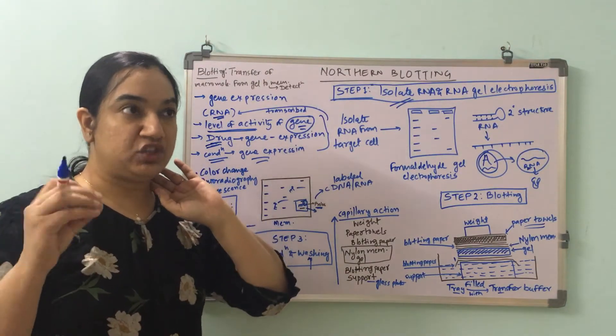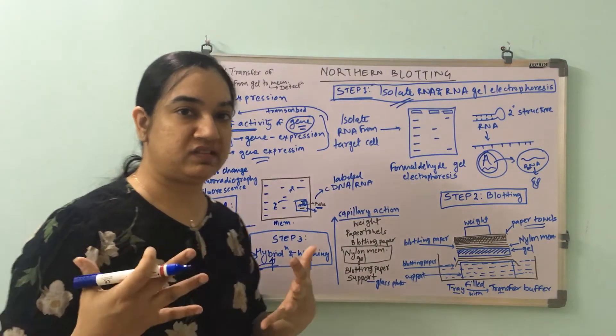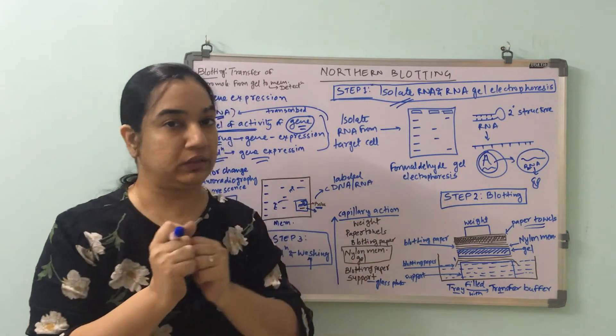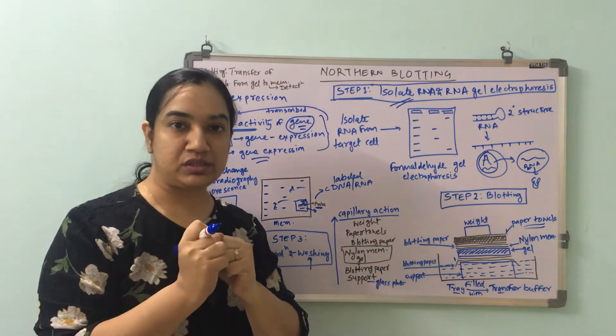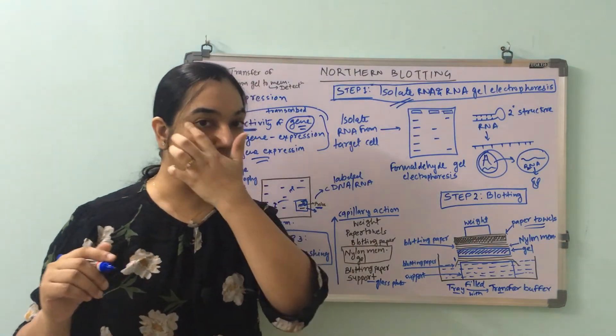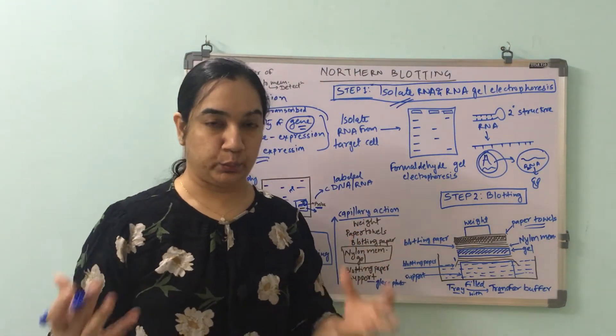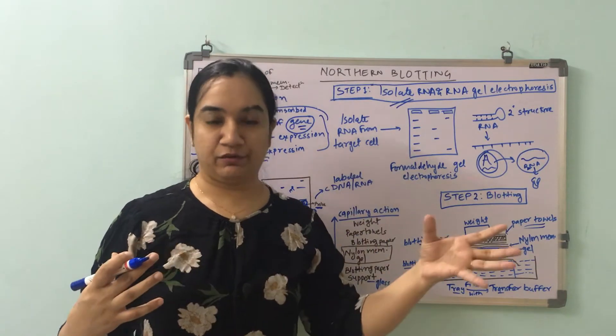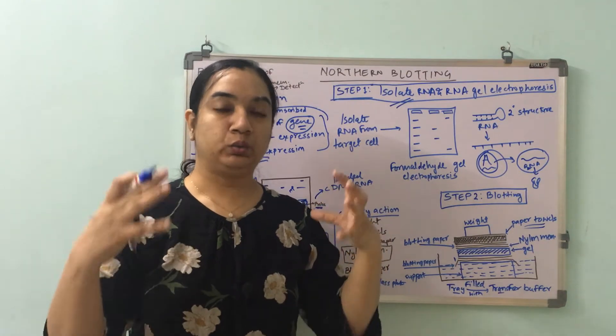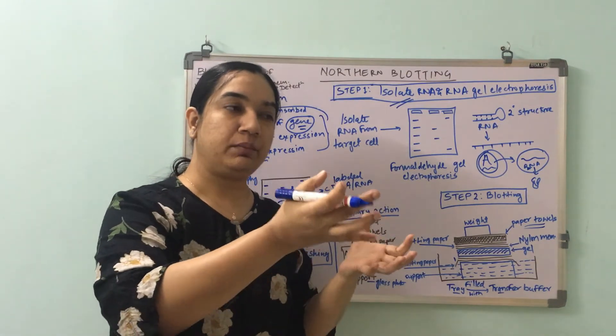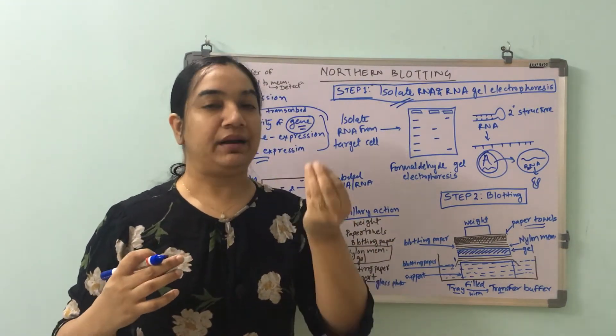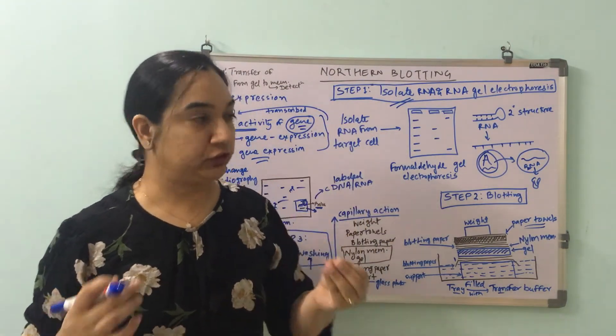So if I want to study a particular gene expression, what should be my first step? Logically, I need to isolate the RNA from that particular sample because I want to see whether that gene is expressed or not. And generally when we talk about all this, these are all known genes that we are working with, because seldom do we work with a rare or very unknown gene. So we are going to work with a known gene and we know what kind of expression, what kind of RNA we are expecting. So we'll take that sample and isolate the RNA first.